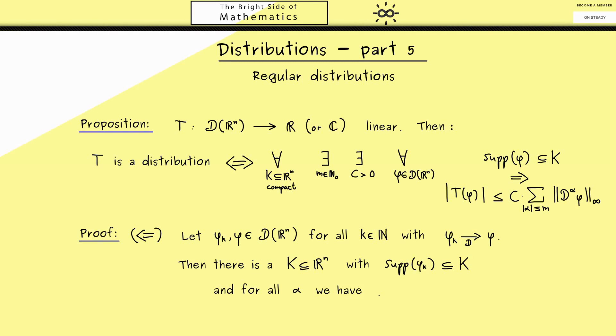Such that the support of all phi_k lies in this compact set k. And we also know that for all multi-indices alpha, we have that the derivatives D^alpha phi_k converge in the supremum norm.